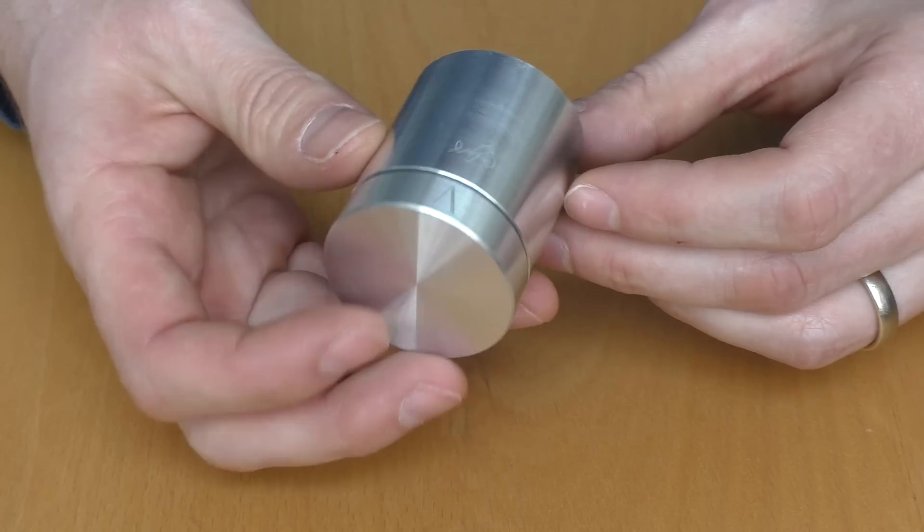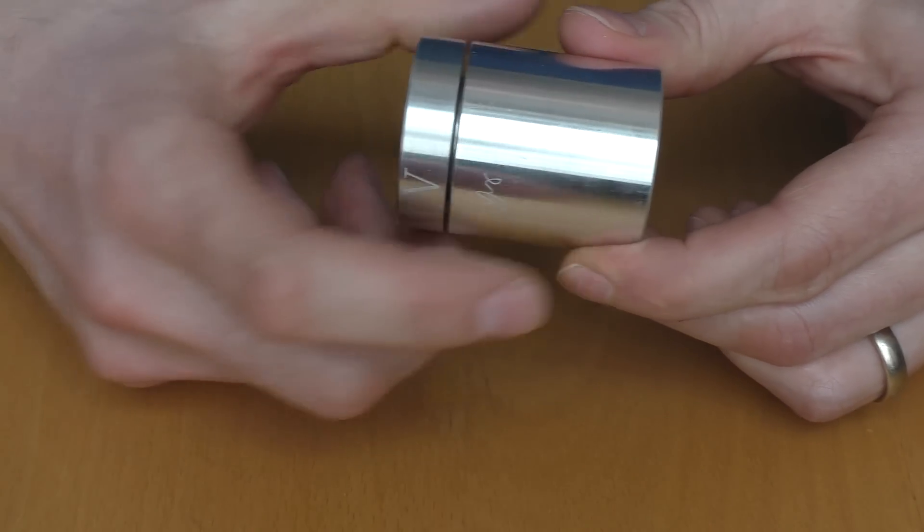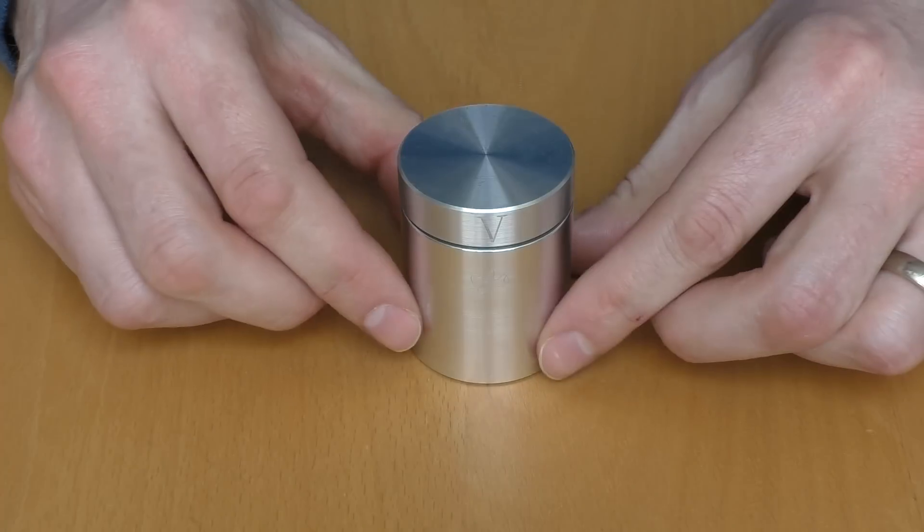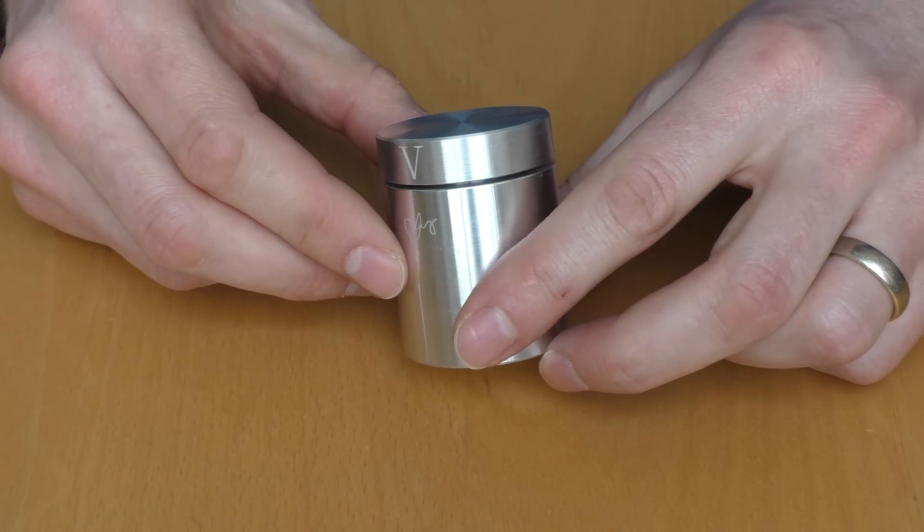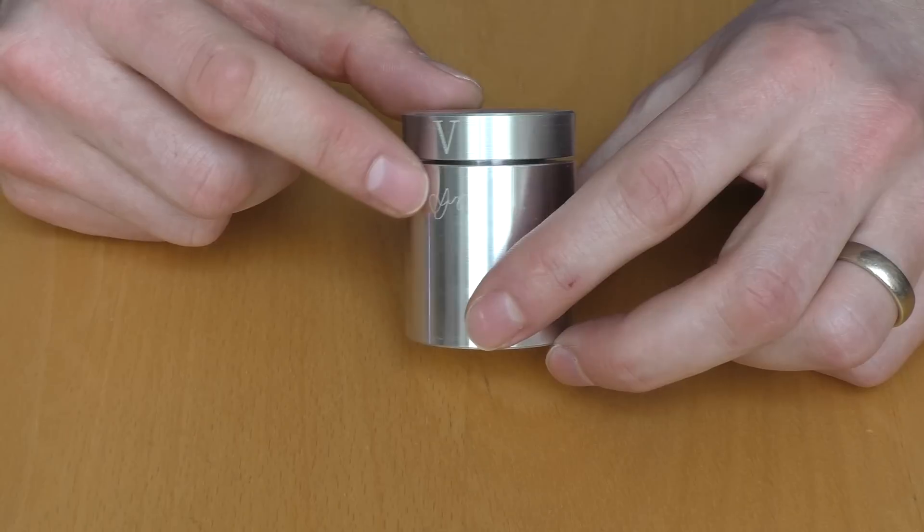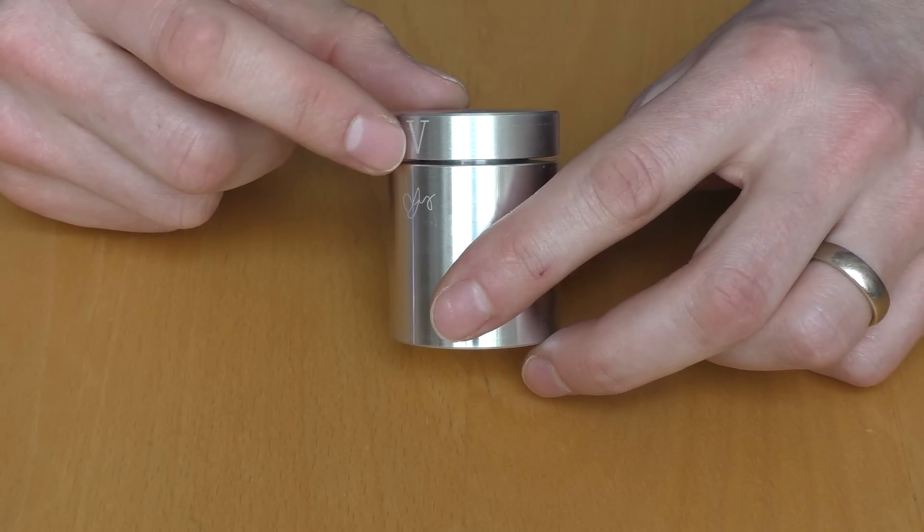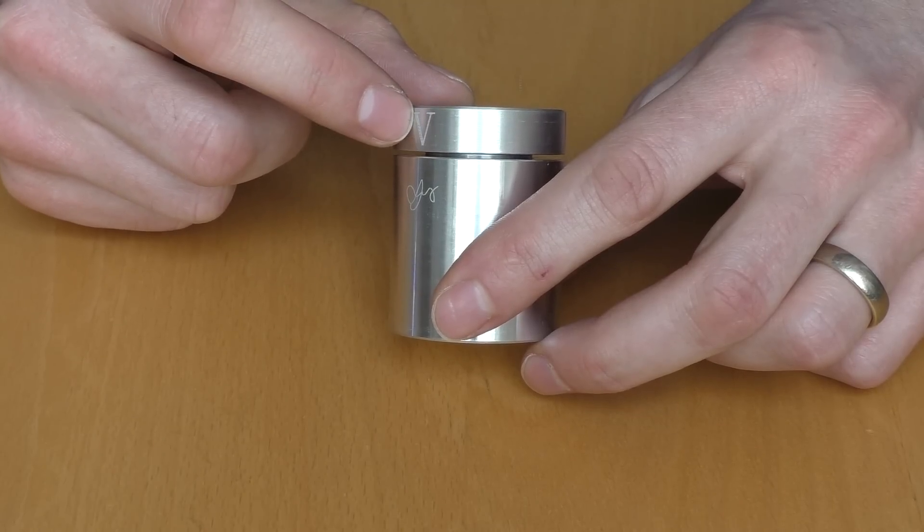When we have a look at this puzzle, it's a metal cylinder, or you can see two cylinders, one bigger one on the bottom and the smaller one on the top. Both of them have some engraving. The lower one has the signature of the creator, or of the designer of this puzzle, and the upper cylinder has an engraved V letter.